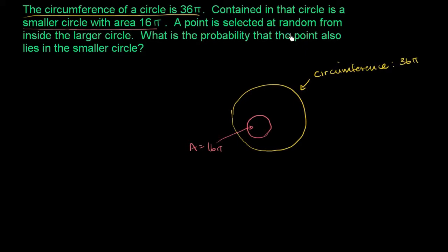A point is selected at random from inside the larger circle. What is the probability that the point also lies in the smaller circle? So here it's a little bit interesting, because you actually have an infinite number of points in both of these circles, not separate balls or marbles, or separate numbers. There's actually an infinite number of points you can pick here.